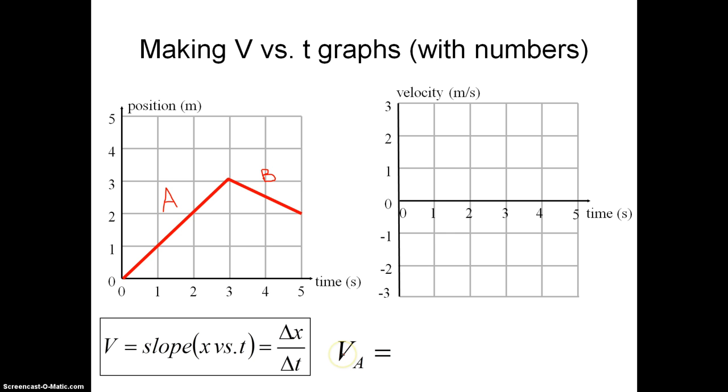So let's calculate the velocity during time A. So from 0 to 3 seconds, it moves from an initial position of 0 meters to a final position of 3 meters. So the object's displacement goes from 0 to 3, so the object is displaced positive 3 meters. It does that in a total of 3 seconds.